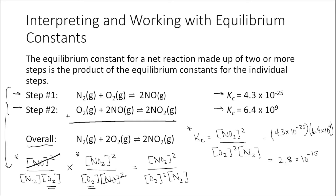Going back to the first part of this tutorial — what does that tell us about this reaction? We notice that this equilibrium constant is very, very small, much smaller than one. That indicates that this overall reaction is very reactant favored at equilibrium. So at equilibrium, you're going to have high concentrations of reactants and low concentrations of products.